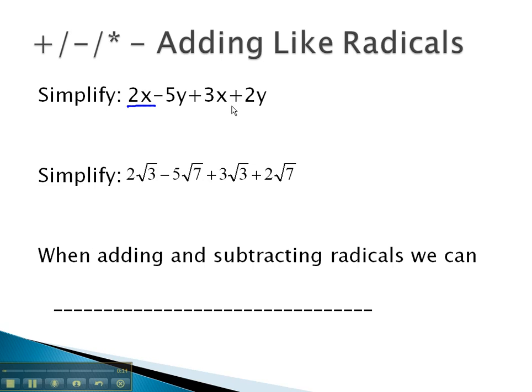When we had problems like this, we would say the 2x and 3x were like terms, giving us 5x. We also see that the negative 5y and the positive 2y are like terms, giving us negative 3y, and we would have our final solution.